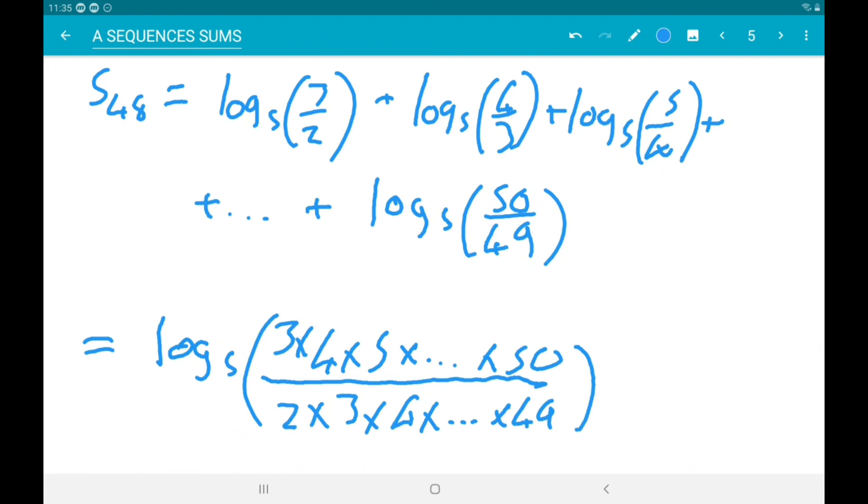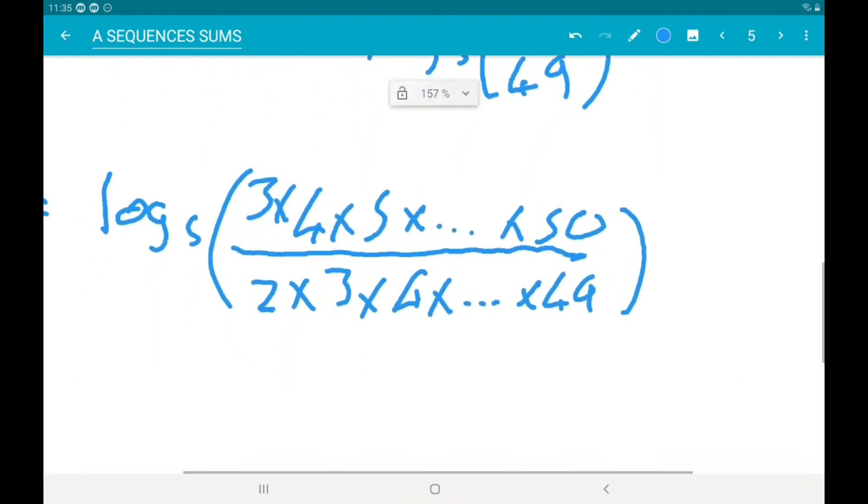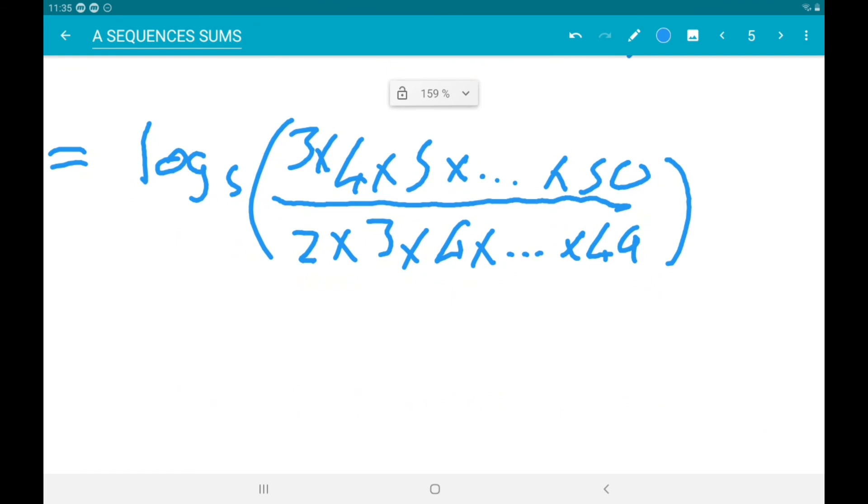All right, now, because that's a fraction inside, we can cancel out common factors. So between the top and the bottom there's a common factor of 3 times 4 times 5 times all the way up to times 49.